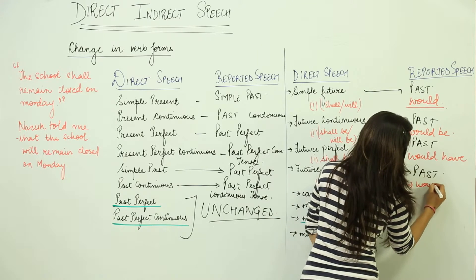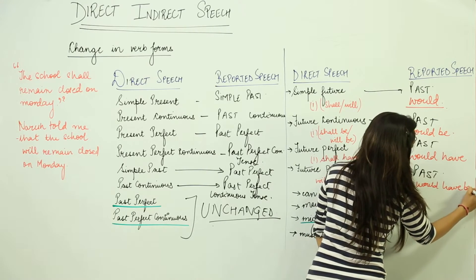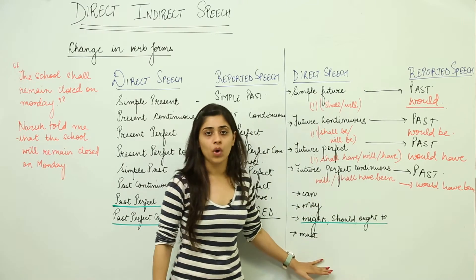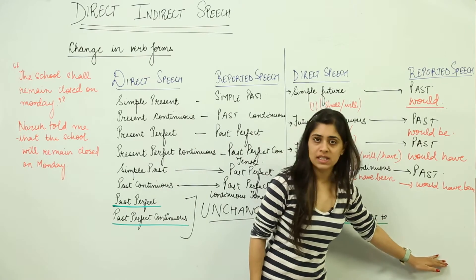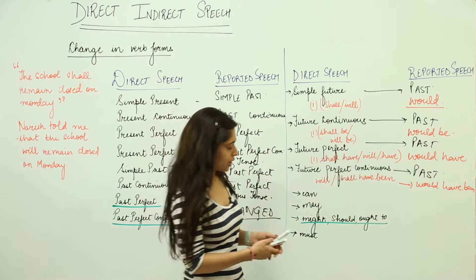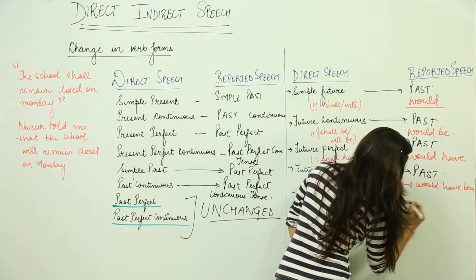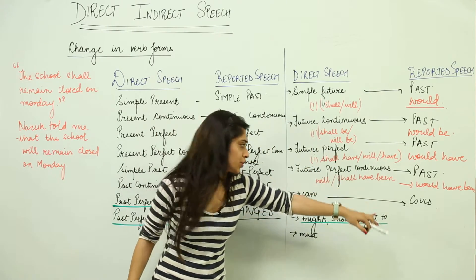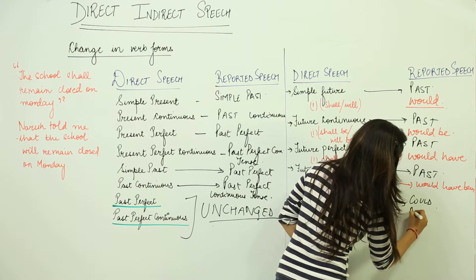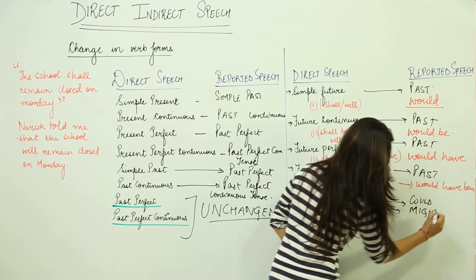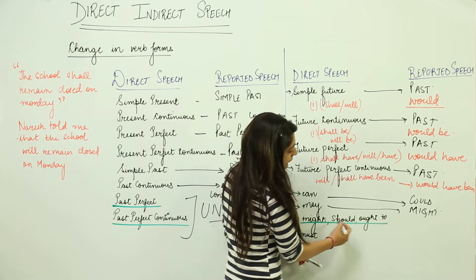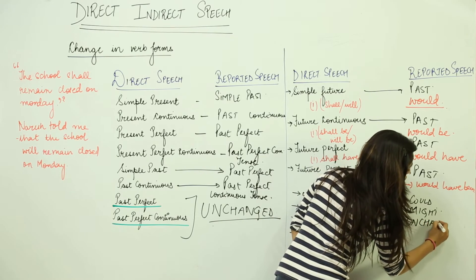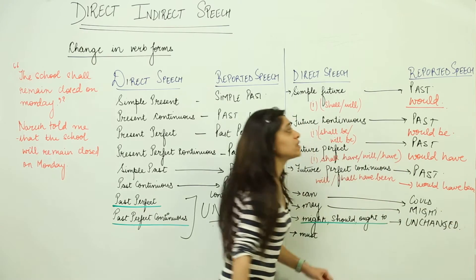Now we have certain words that get converted from direct speech to reported speech. 'Can' gets converted to 'could'. 'May' gets converted to 'might'. 'Might', 'should', and 'ought to' remain unchanged most of the time, because they are already in a reported form or already in their past form.